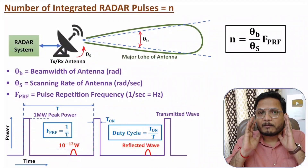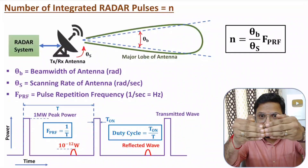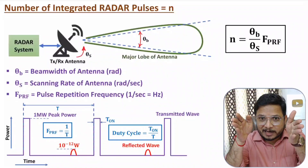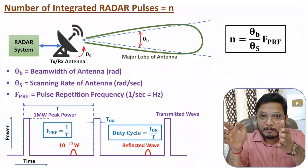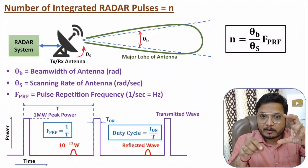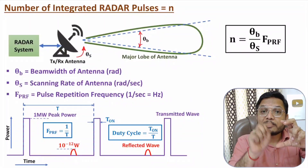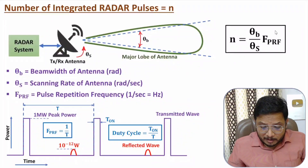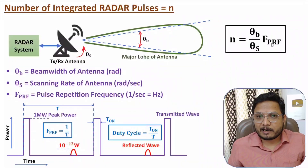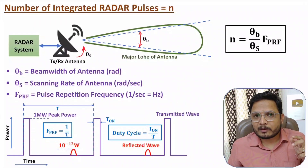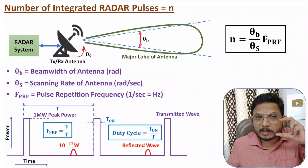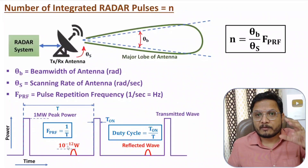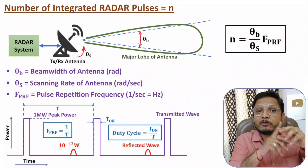To understand this: the antenna is focusing over angle theta b, and an object is within that angle. The radar is moving at a rate of theta s. So theta b divided by theta s gives the time duration, and multiplying by pulse repetition frequency tells you how many pulses are transmitted in that time frame — that is how many pulses can be integrated. For example, a single pulse has strength of 10 to the power minus 12 to minus 15; if you have 100 pulses, the total strength increases to 100 times 10 to the power minus 12.